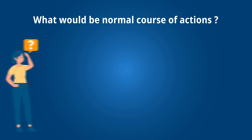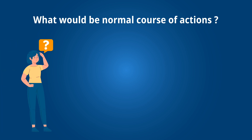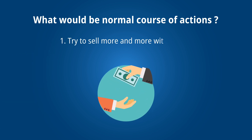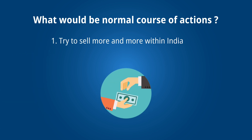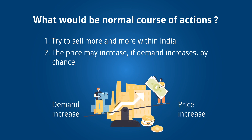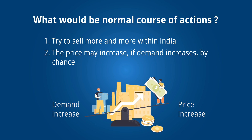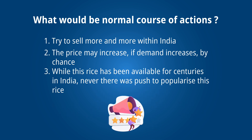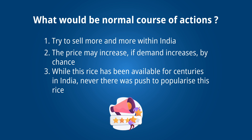I always ask: what would the normal course of action have been in this situation? Normally, people would have tried to sell more within India. By chance, if demand increased, price might have risen and farmers may have gotten a slightly better price. But while this rice has been available for centuries, it is not a new rice — there was never a push to popularize it, despite the many benefits it is claimed to have.